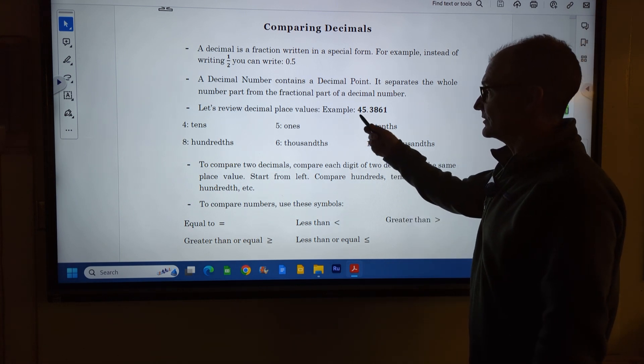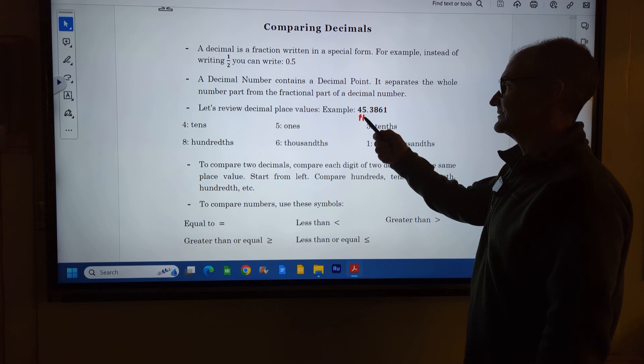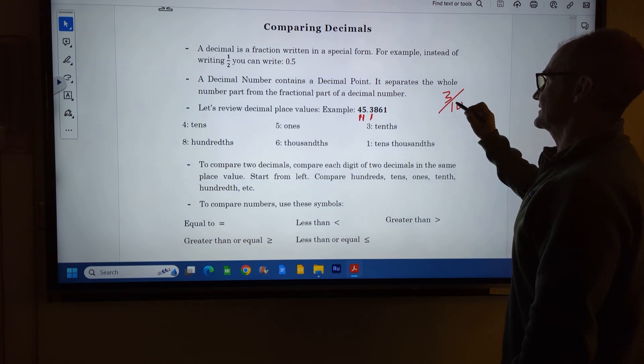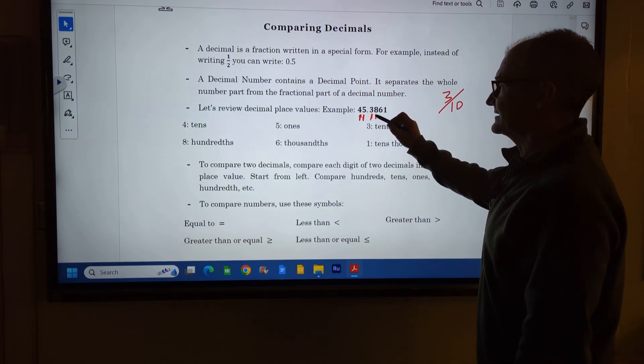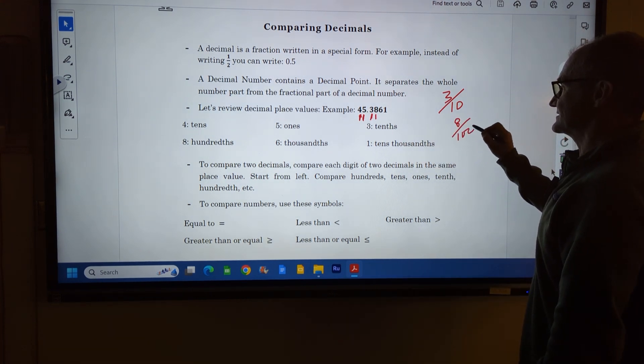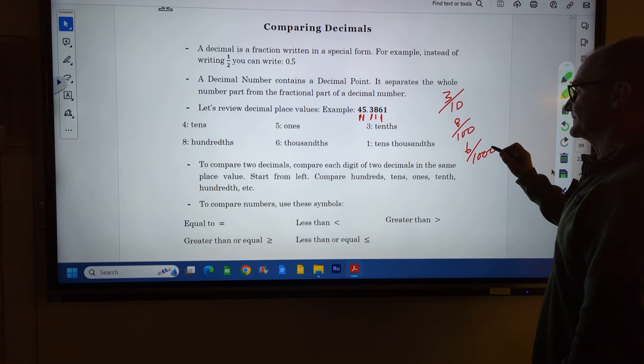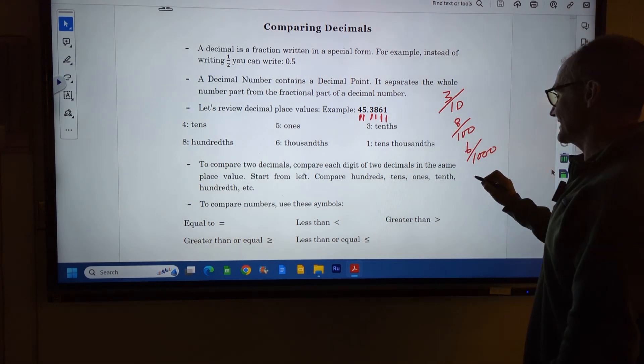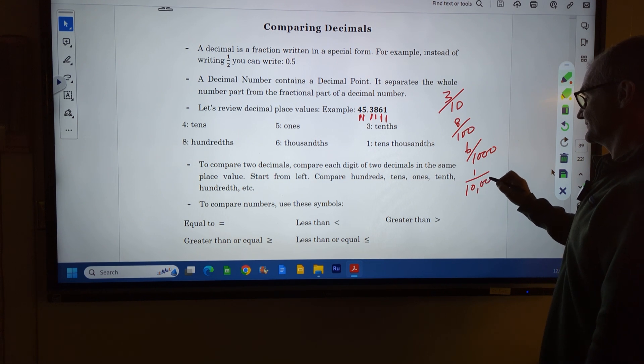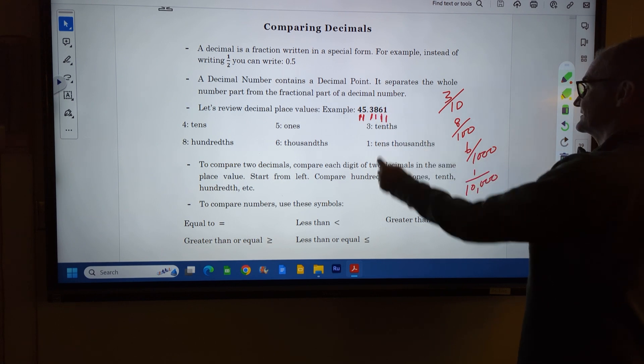The 4 is the tens place, the 5 is the ones place. Then we get to the decimal point. This 3 is the tenths place, so that's three tenths of 1. That 8 is the hundredths place. The 6 is the thousandths place, six one thousandths. And then that 1 is the ten-thousandths place.